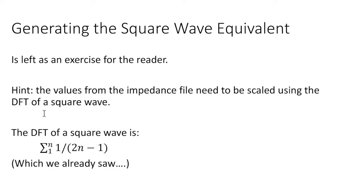Well, it turns out that it's relatively easy to make that impulse waveform that you saw using the inverse discrete Fourier transform. It's somewhat more difficult to do the square wave version, but only slightly. And I leave that as an exercise for the reader. However, the hint is that the impedance file measurements, or those voltages we use, need to be scaled using the discrete Fourier transform of a square wave, which sounds complicated, but we've already seen that.